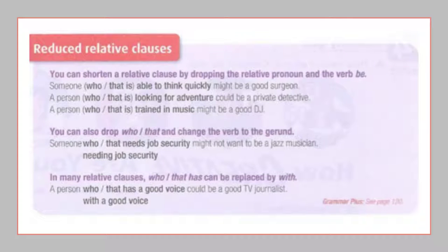Reduce relative clauses. You can shorten a relative clause by dropping the relative pronoun and the verb 'be'. Someone who/that is able to think quickly might be a good surgeon. A person who/that is looking for adventure could be a private detective. A person who/that is training in music might be a good DJ.